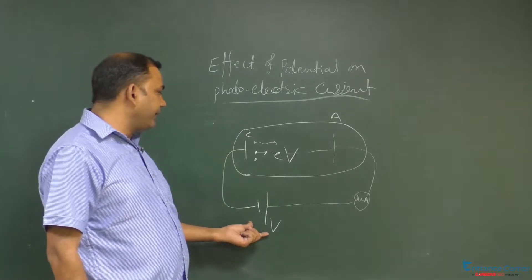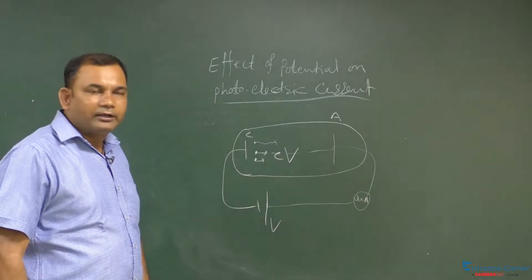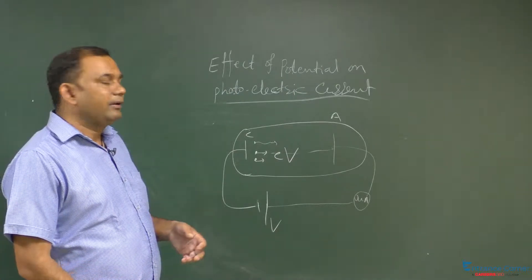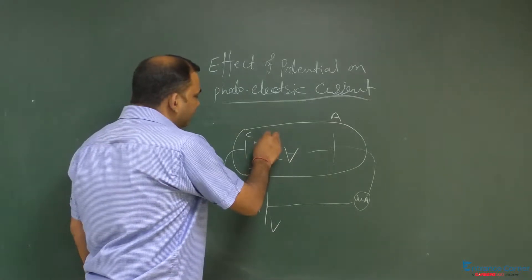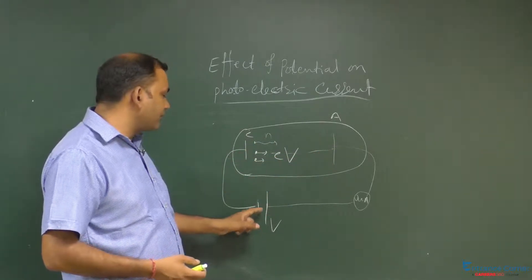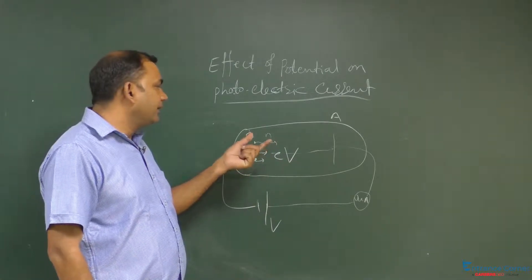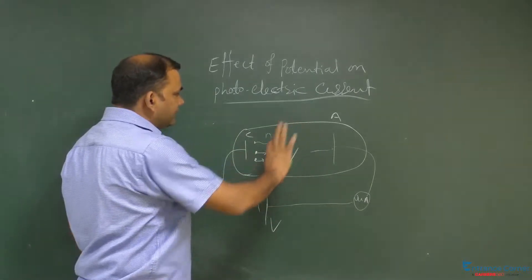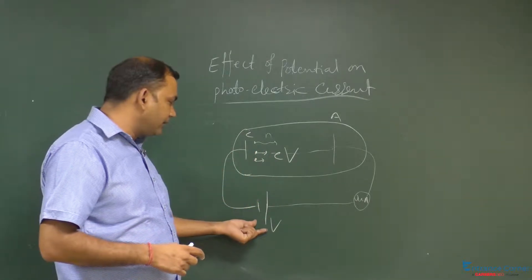इसका मतलब अगर हम V बढ़ाएंगे, तो ज्यादा number of electrons anode पर पहुचेंगे, और उतना ही current increase होगा. लेकिन यहाँ पे एक चीज़ ध्यान रखनी है. Suppose number of photoelectrons are n, और जब सारे के सारे photoelectrons यहाँ पे पहुच जाएगे, उसके बाद अब कितना भी potential increase करो, there is no change in the current, and that current when maximum number of photoelectrons reach the anode.